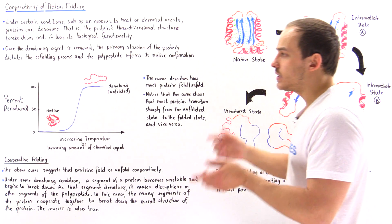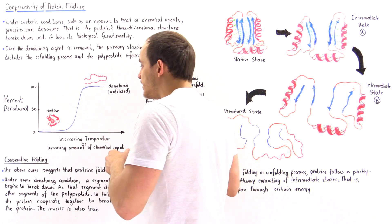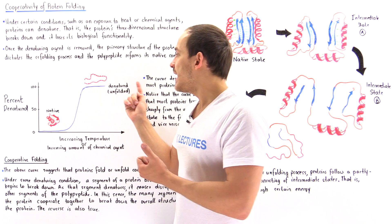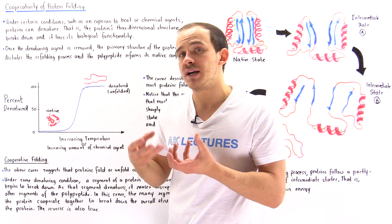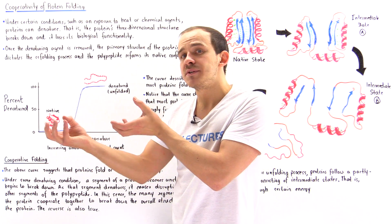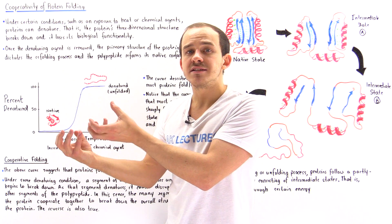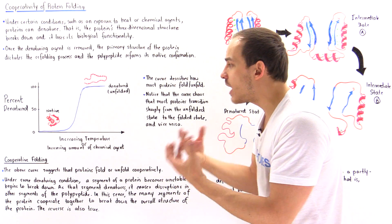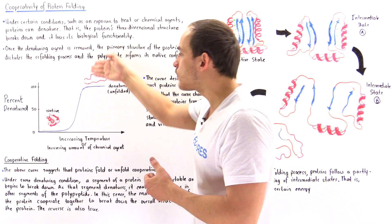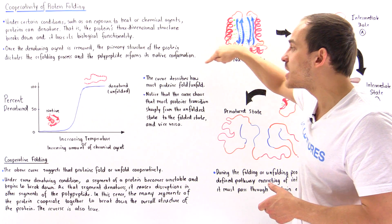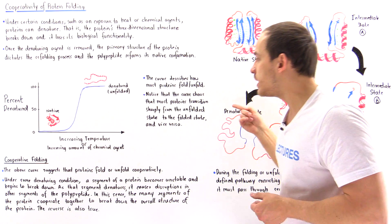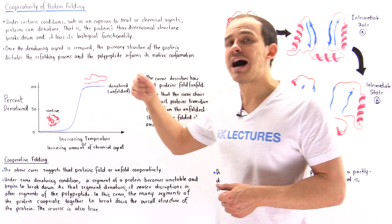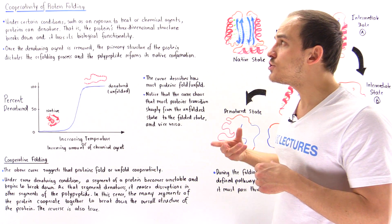Likewise, going the other direction: as we decrease the temperature, a certain segment of the denatured protein begins to stabilize and interact with adjacent segments. Those interactions stimulate other segments to stabilize themselves, and so this cooperativity causes the folding process to take place quickly, shown by the sharp rise in the curve. Most proteins in our body fold or unfold in this way, transitioning sharply between states because of the cooperative nature of protein folding.